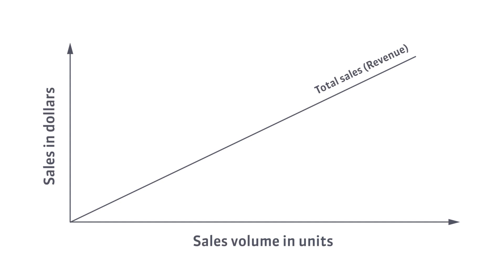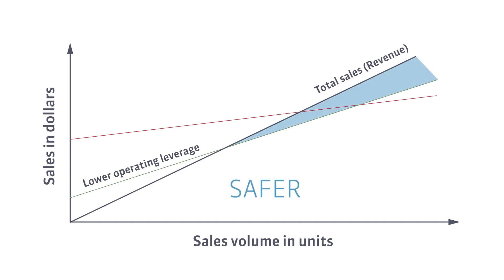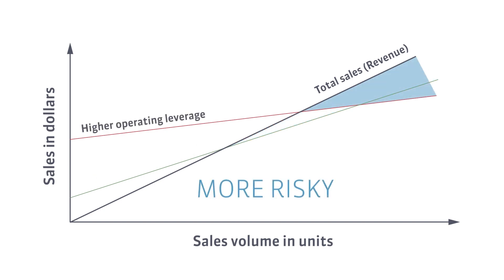In a CVP graph, operating leverage corresponds to the slope of the total costs line. The more horizontal the slope of this line, the greater the operating leverage. The break-even point changes with the size of the operating leverage. We can say that lower operating leverage is safer, while high operating leverage is more risky.